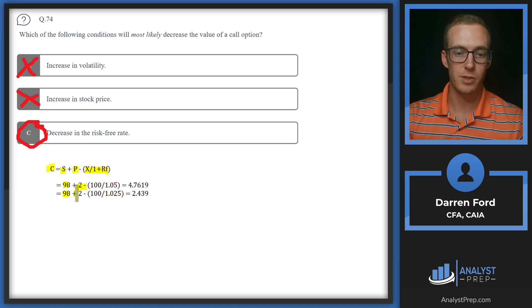We've got 98 for the hypothetical price of the stock, put cost $2, and the strike price is 100. The only thing I toggled was the risk-free rate. In the first scenario I put a 5% risk-free rate, second scenario I put 2.5%. We can see as the interest rate decreases, it decreases the value of that call option.